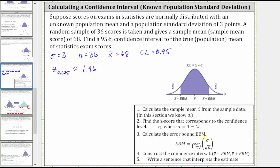The next step is to calculate the error bound, which is the z-score times the population standard deviation divided by the square root of the sample size. So the error bound is equal to 1.96 times the population standard deviation, which is three, divided by the square root of the sample size, which gives us the square root of 36. The square root of 36 is six, and therefore this fraction simplifies to 1.96 times 0.5, which equals 0.98.